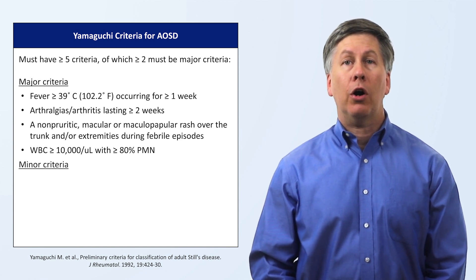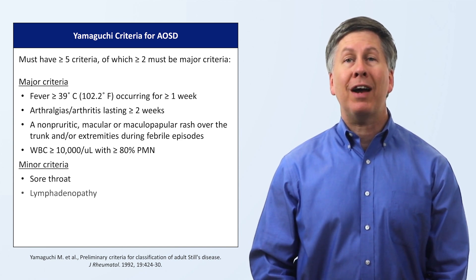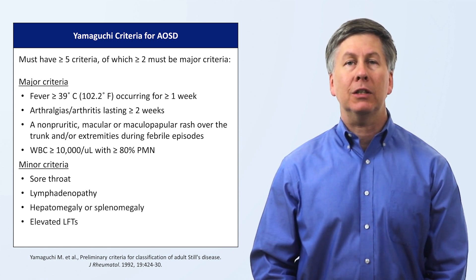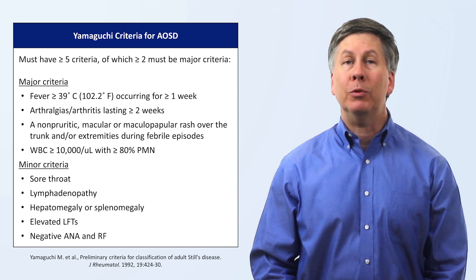The minor criteria are a sore throat, lymphadenopathy, hepatomegaly or splenomegaly, elevated LFTs, and a negative ANA and rheumatoid factor.